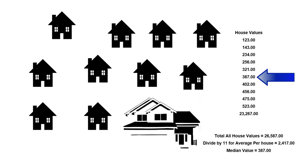In this case, one of the guys in the neighborhood hits the lotto, tears down his house, and builds a mansion worth $23,267. So now we find the median value by putting the houses in order again, going to the middle one — it is $387. But doing an average gives you $2,417, which throws off the average for all these houses, and nobody will ever buy one when they see that number.